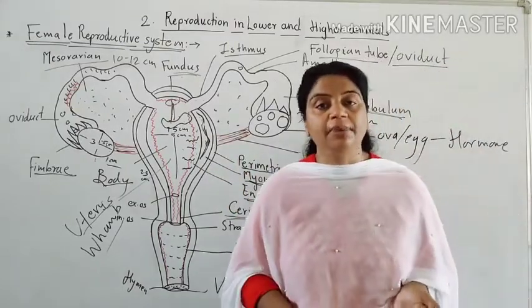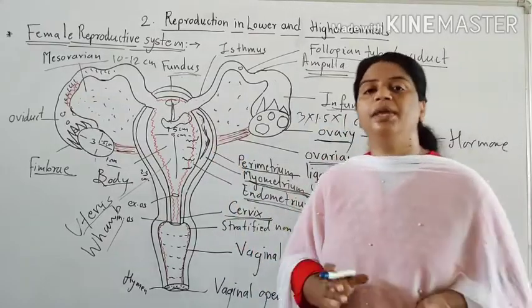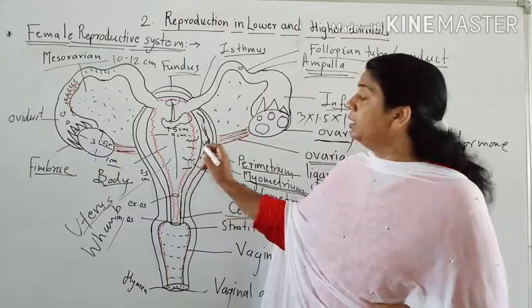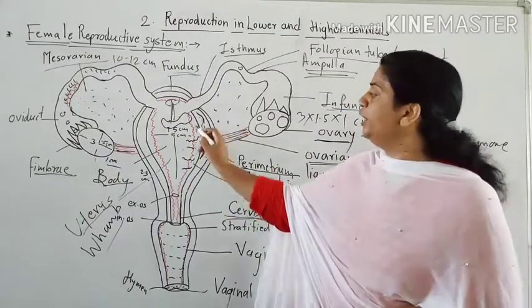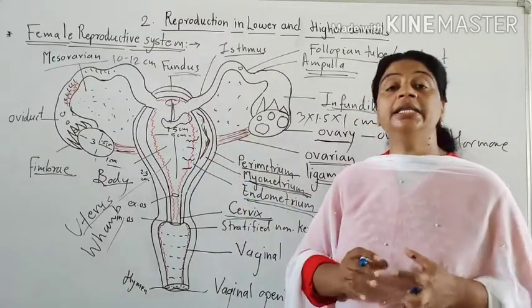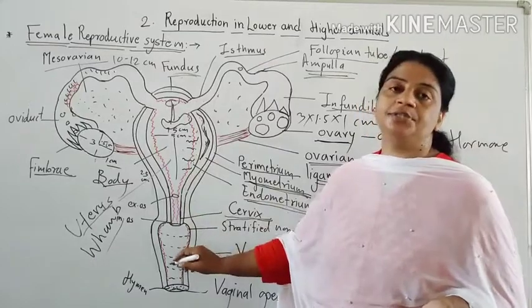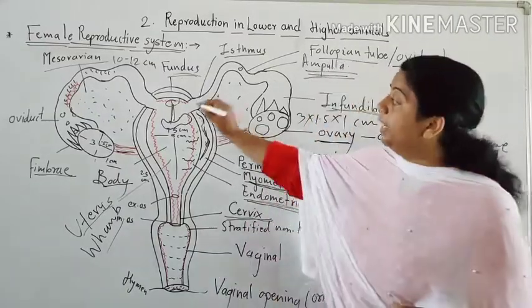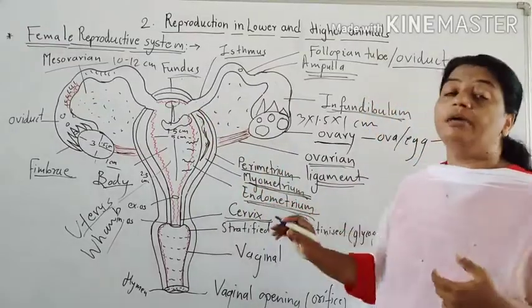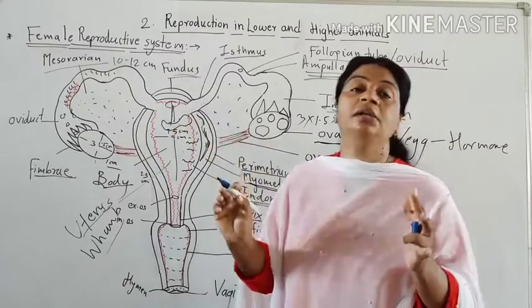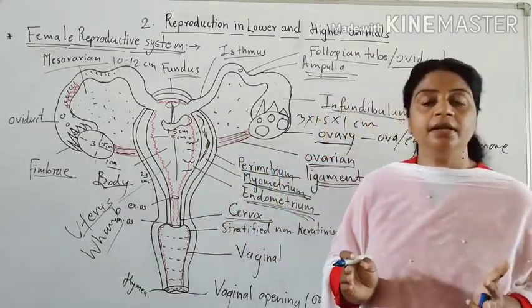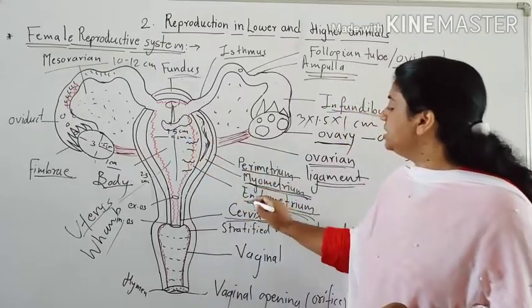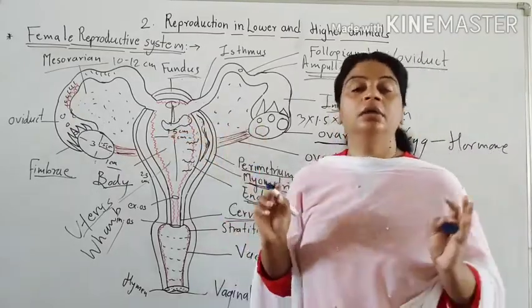The uterine glands create uterine milk, which nourishes the early developing embryo at the blastula stage. The endometrium is the site of menstruation and is highly supplied with blood vessels. At the end of the menstrual cycle, on day 28, this highly vascular endometrium breaks down and bleeding takes place. It is also the site of implantation. The endometrium gives nourishment to the developing young one throughout the 9-month gestation period.